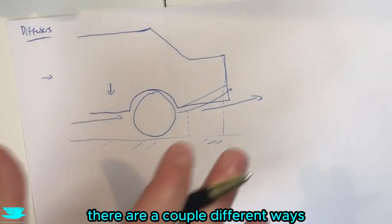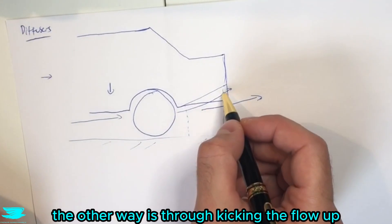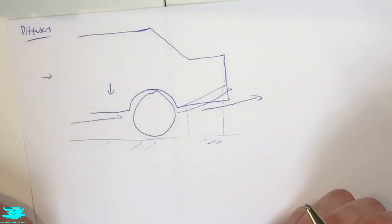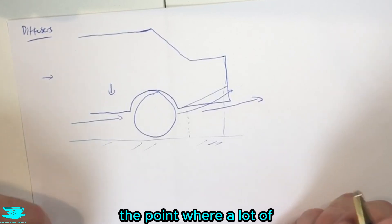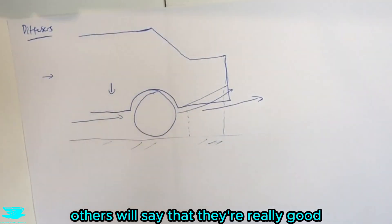So there are a couple different ways you can produce downforce. One just through the pressure difference at the underbody. The other way is through kicking the flow up. So this is where we come to the point where a lot of some papers, like if you look online, some papers will say that diffusers aren't that good.